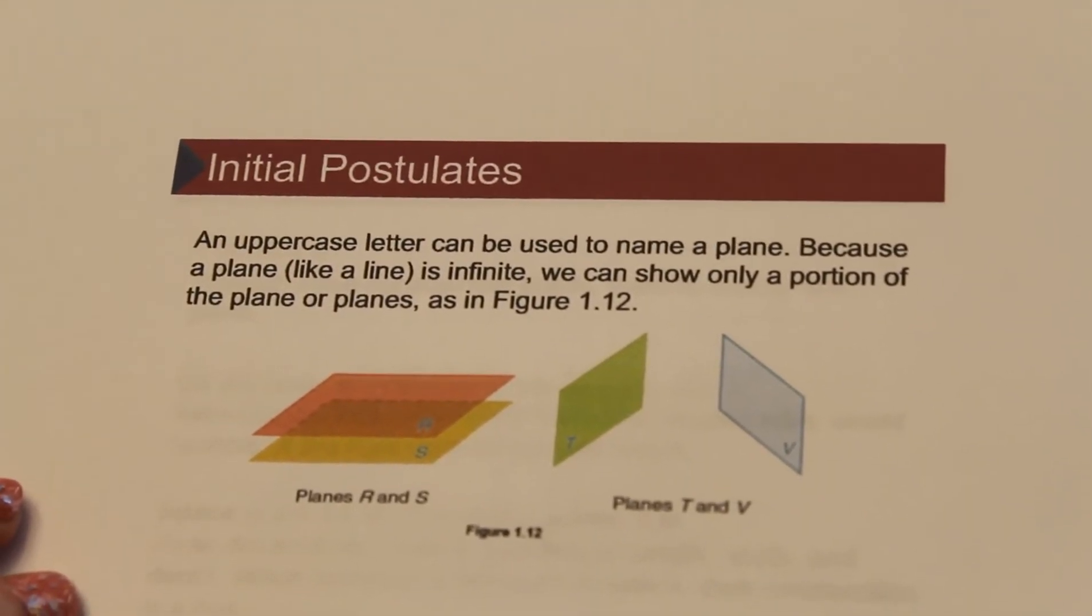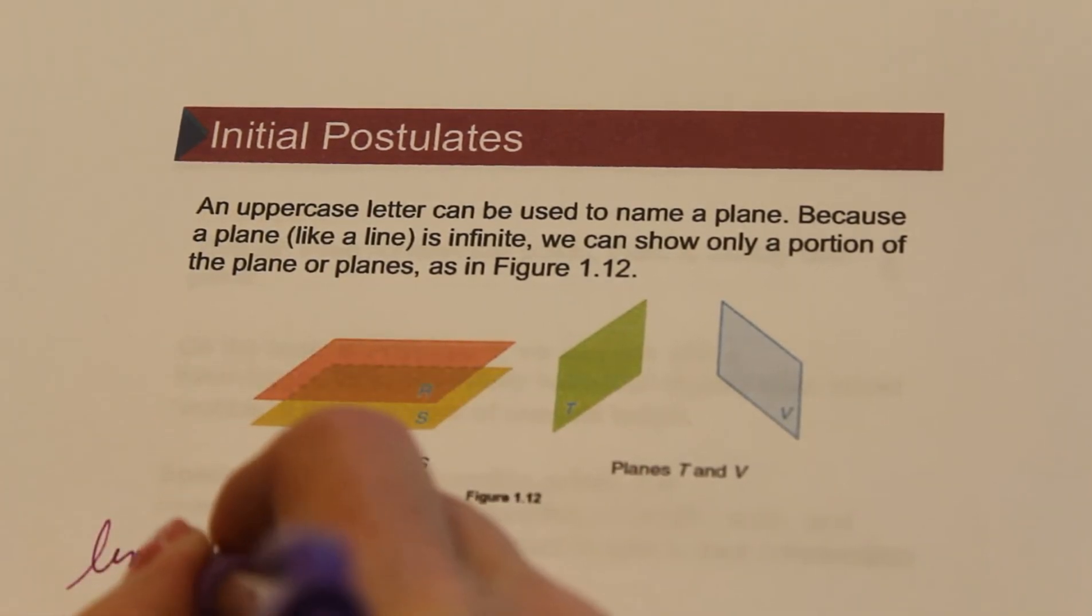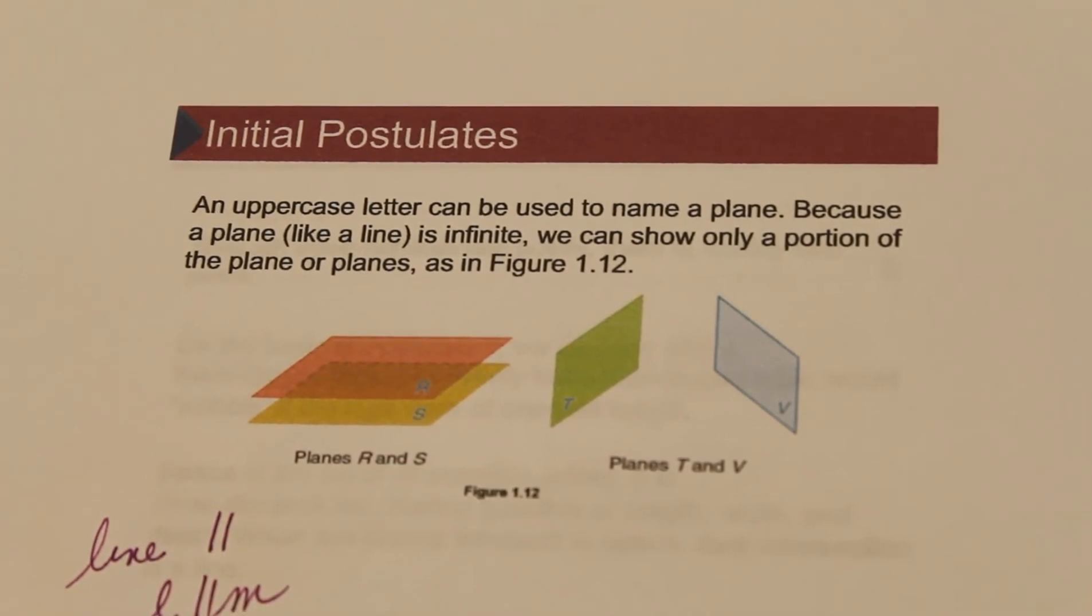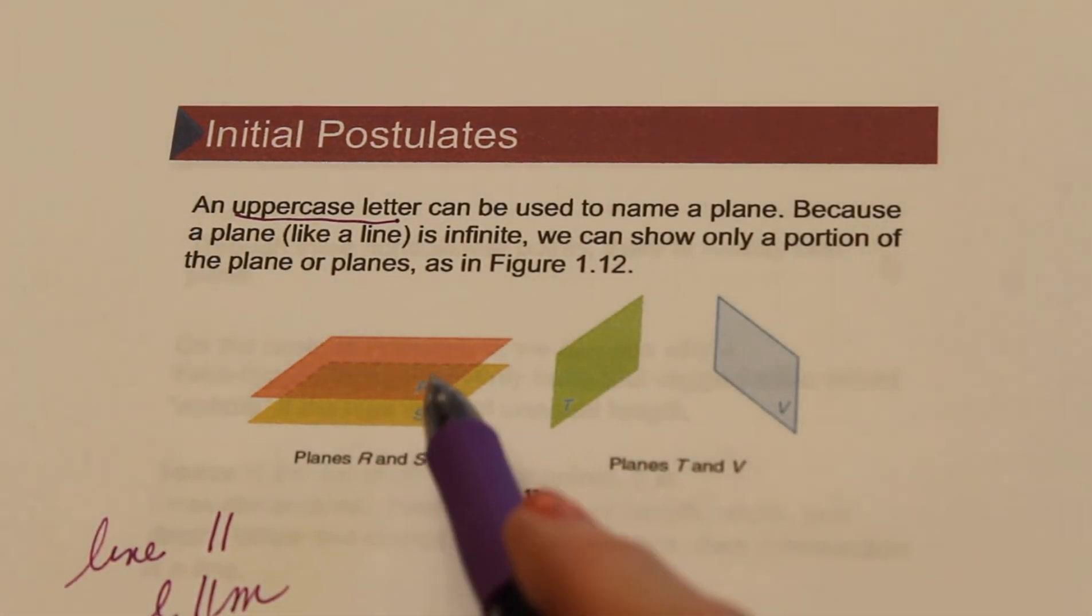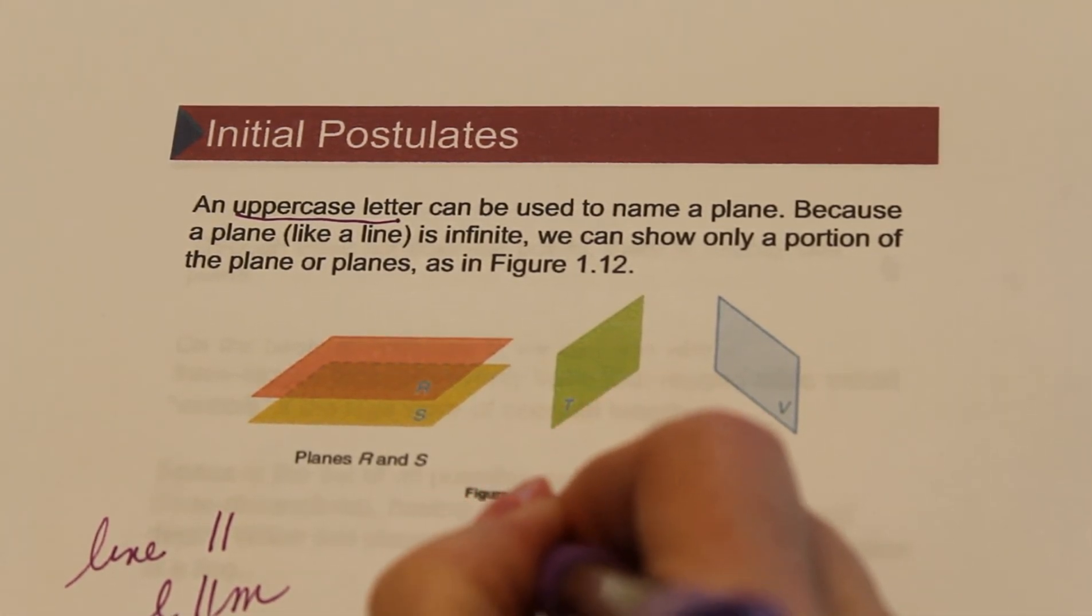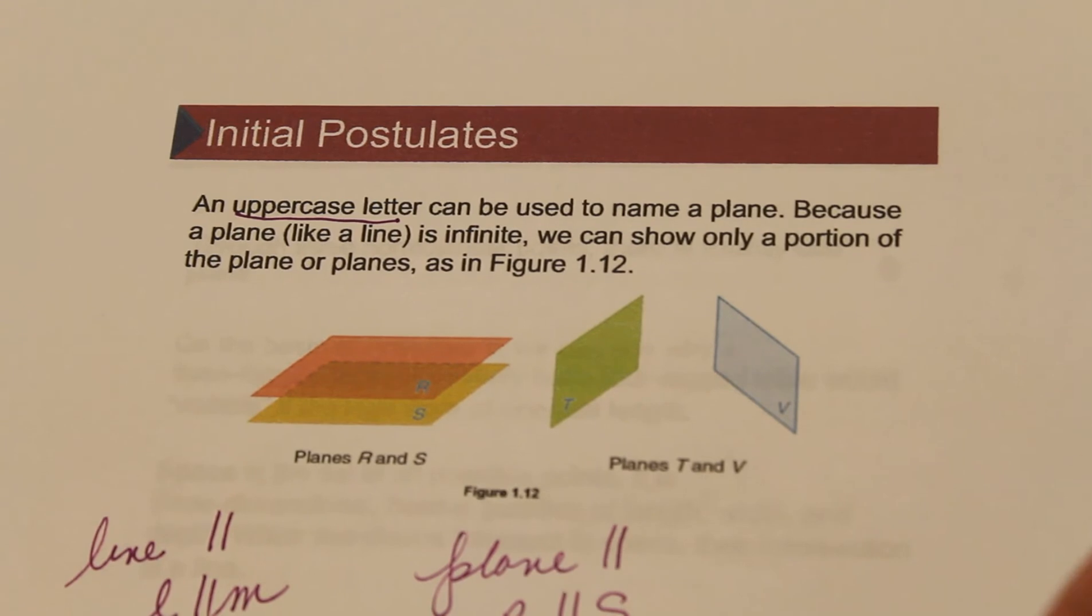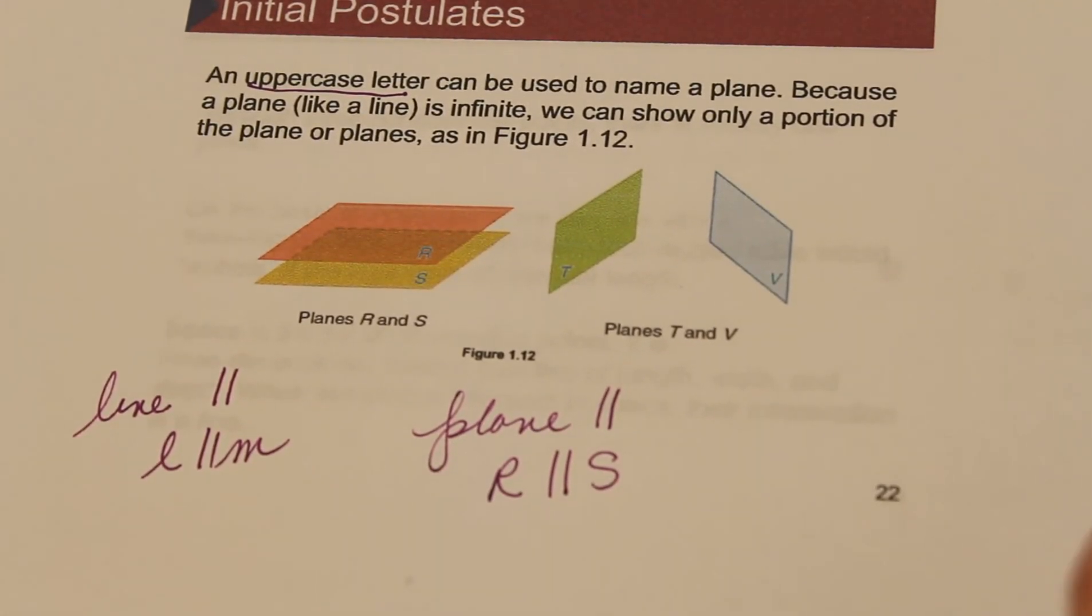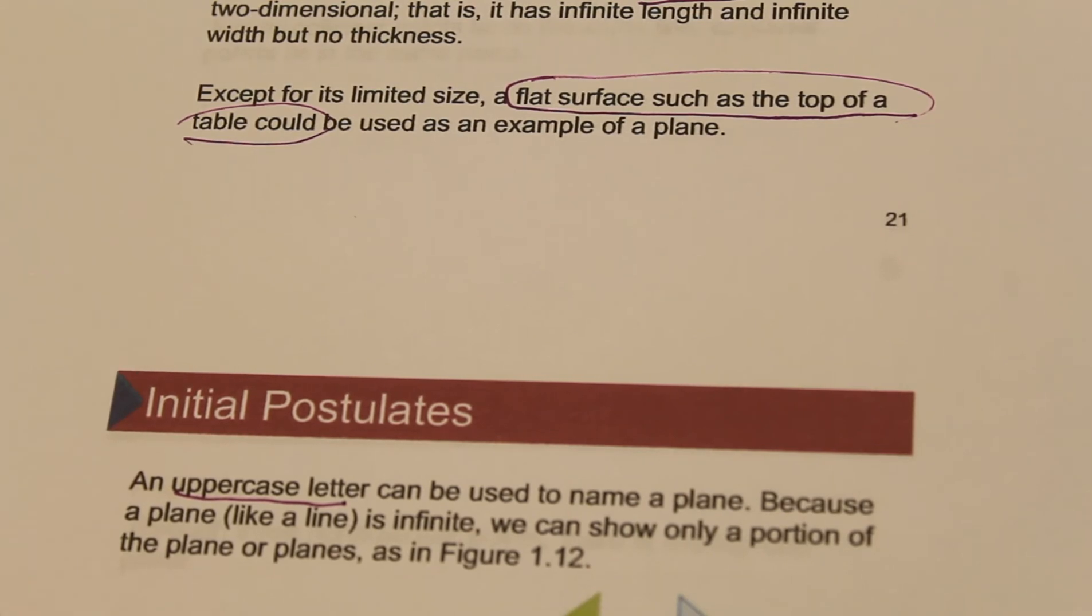Here we have pictures. So if lines can be parallel, we had L was parallel to M before. Planes are flat surfaces, they are named with uppercase letters. So here's plane S and here's plane R. Planes can also be parallel and never intersect. So we would say plane R is parallel with plane S. Planes can be parallel as well, they might never intersect. So you might think of like the walls of the classroom are parallel planes because they will never intersect, whereas the wall and the floor are not parallel because they intersect at the baseboard.